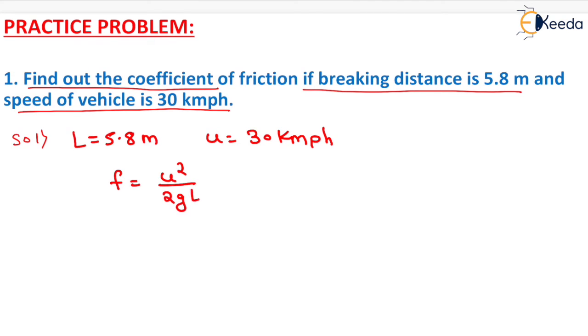Here u is in meters per second, so for conversion of u from kilometers per hour to meters per second, we have to multiply in the numerator 0.278 into the value of u, that is 30, whole squared, upon 2 into 9.81 into the breaking distance that is 5.8 meters.